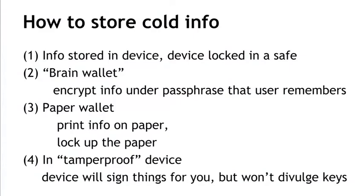With that in place, we can talk about the different ways in which cold information can be stored. Information on the cold side — whether it's a key, key generation info, or something else — is stored offline. The first way is to store the information in some kind of device and just put that device in a safe. It might be a laptop computer, a mobile phone or tablet, or just a thumb drive. We store the information on that device, turn the device off, and lock it up. If somebody wants to steal this, they have to get into our locked storage and get that device away from us.